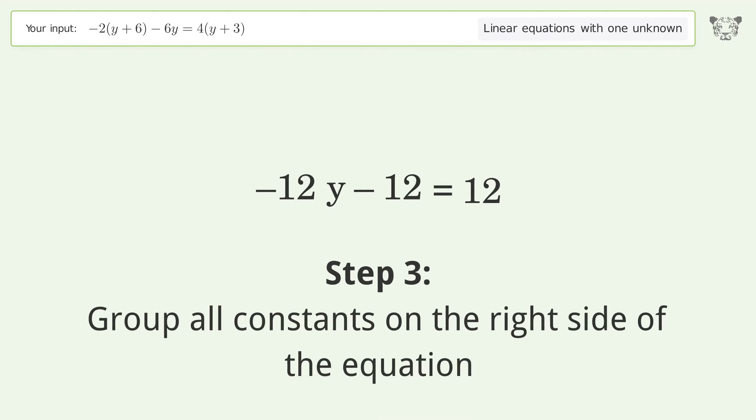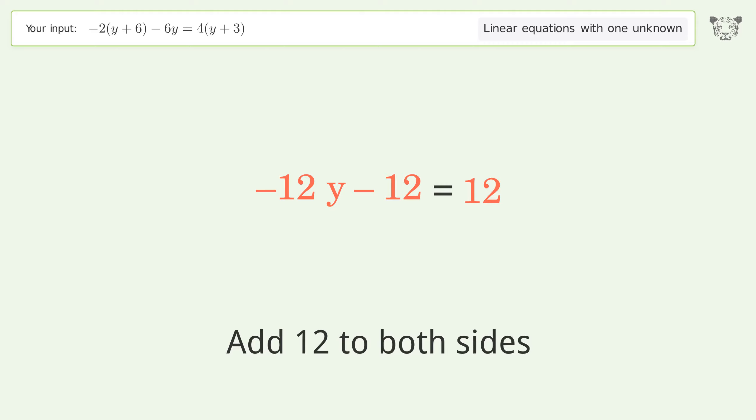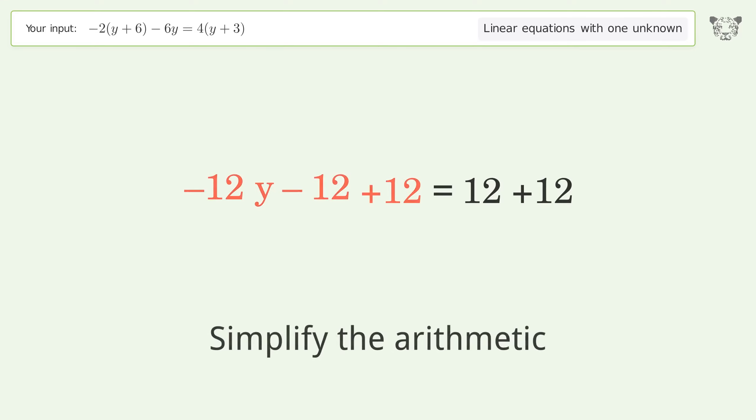Group all constants on the right side of the equation. Add 12 to both sides. Simplify the arithmetic.